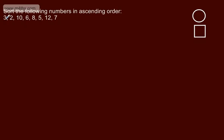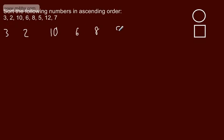So we've got 3, 2, 10, 6, 8, 5, 12, and 7. I'm going to write these now across the page: 3, 2, 10, 6, 8, 5, 12, and 7. What we need to do is start with a pivot.